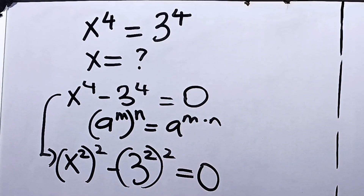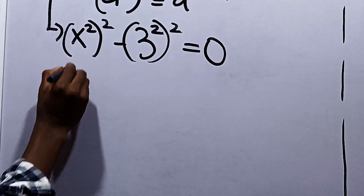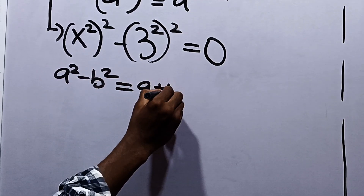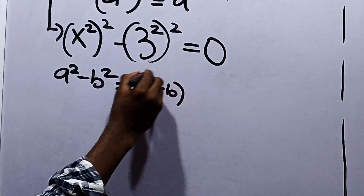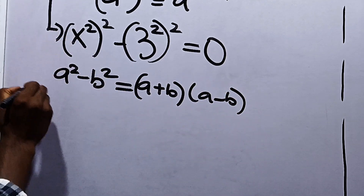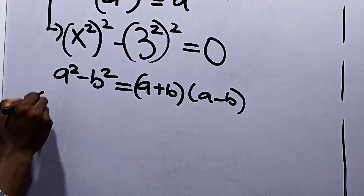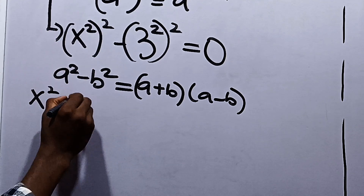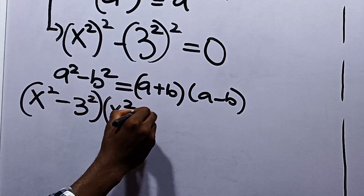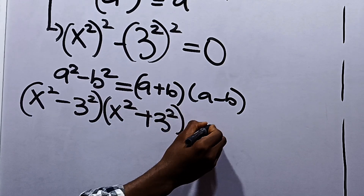As you can see, this is because of the difference of two squares. The difference of two squares is that if I have a squared minus b squared, it's equal to a plus b multiplied by a minus b. So from here, we are going to have x squared minus 3 squared multiplied by x squared plus 3 squared to be equal to 0.